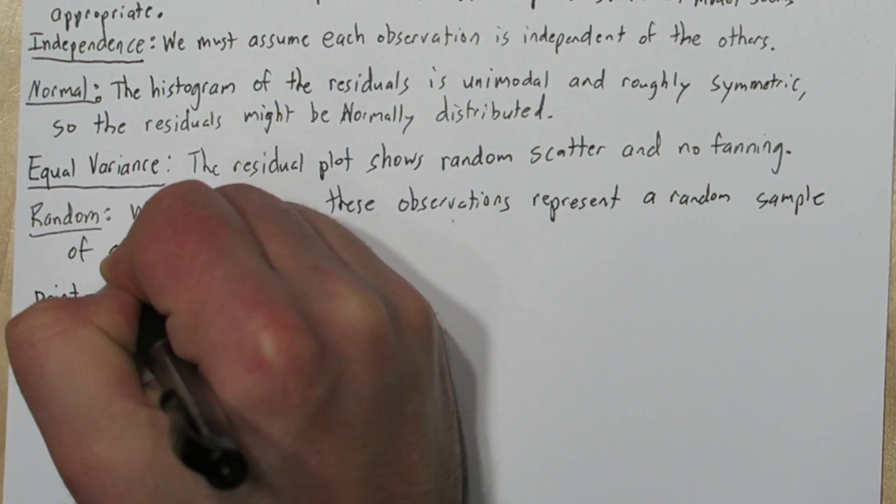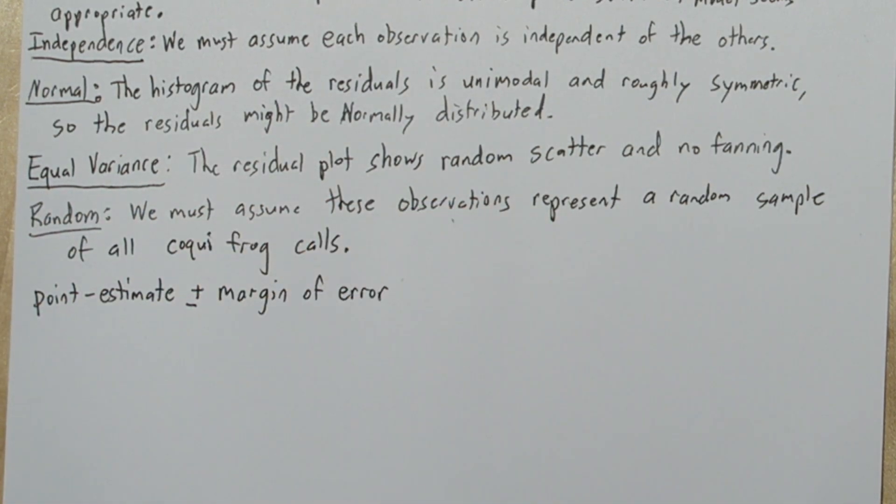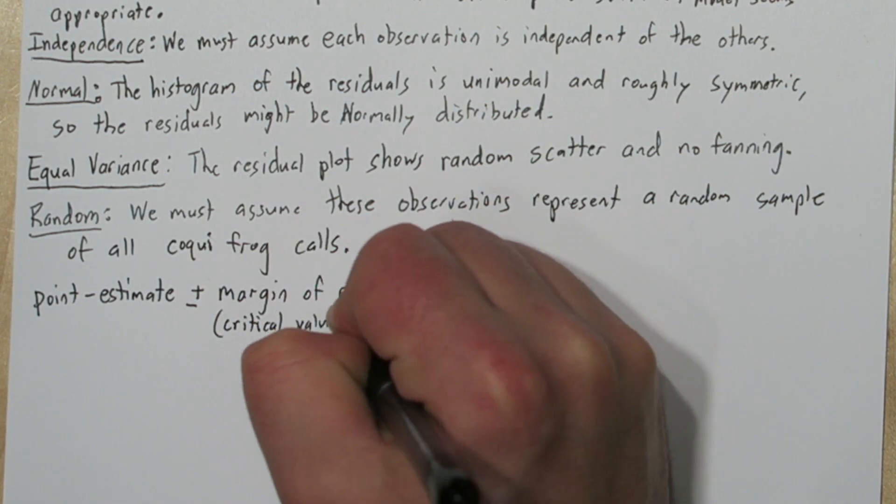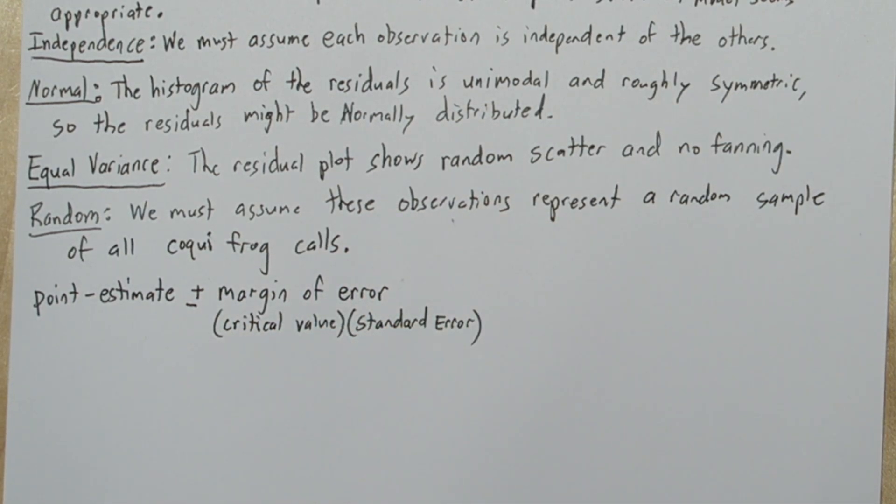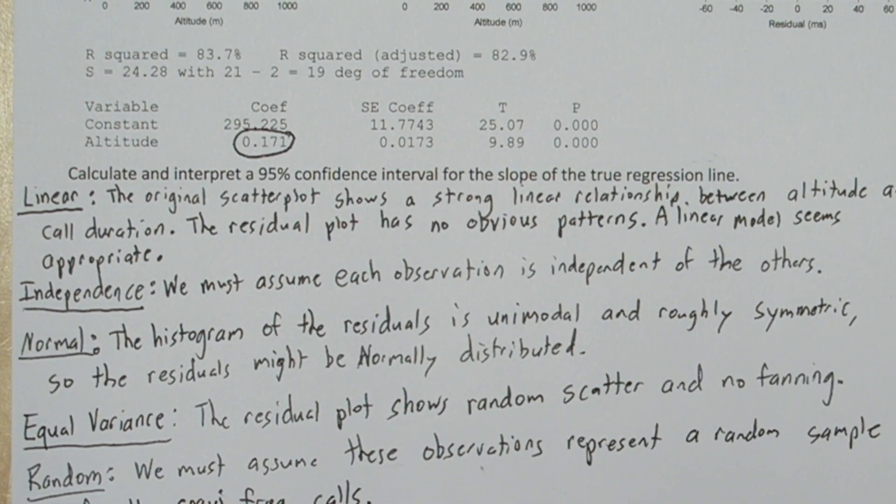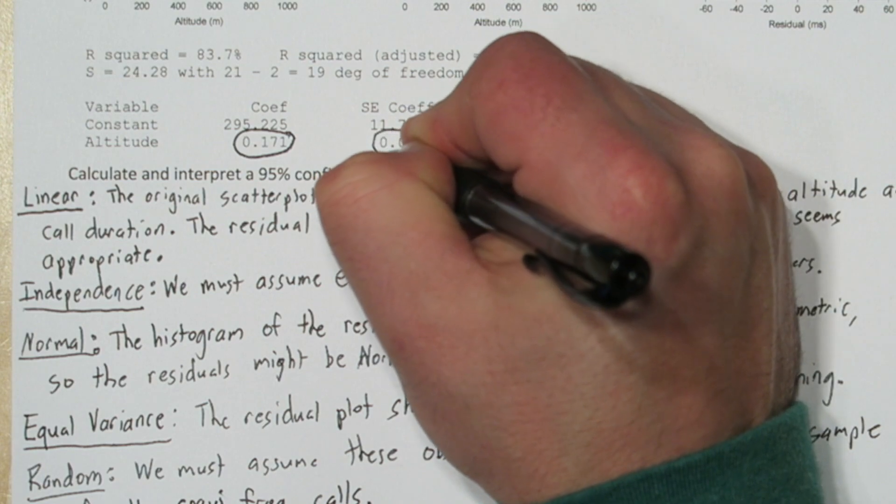Now, all confidence intervals are a point estimate plus or minus a margin of error, which is the product of the critical value and the standard error. Since we're trying to estimate the slope, our point estimate can be found right here. It's the coefficient of altitude in our computer output. We also have the standard error right next to it.